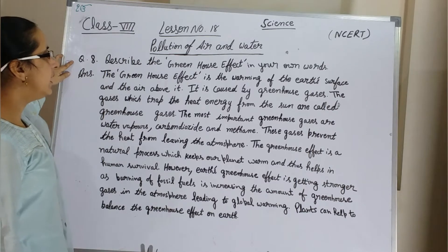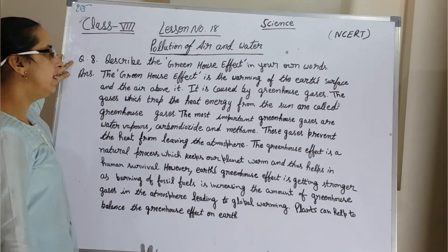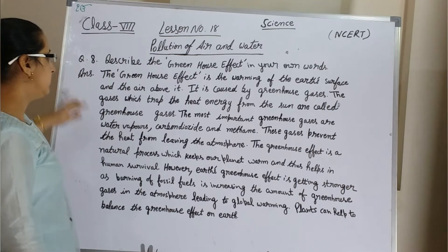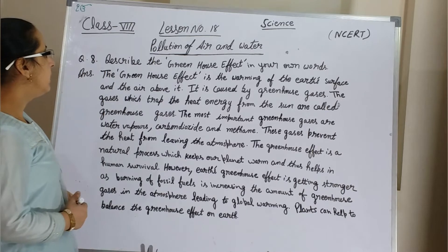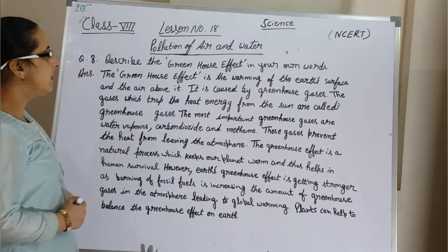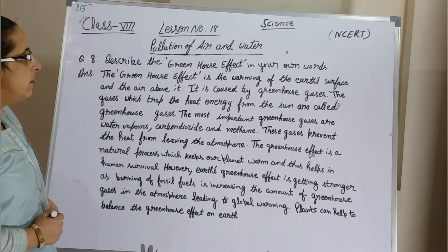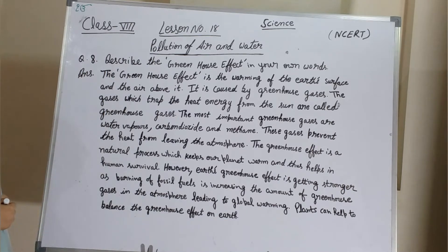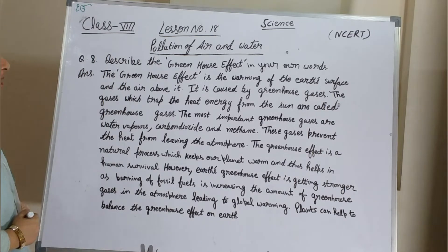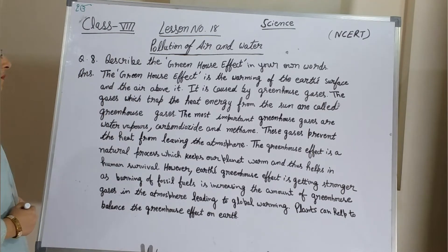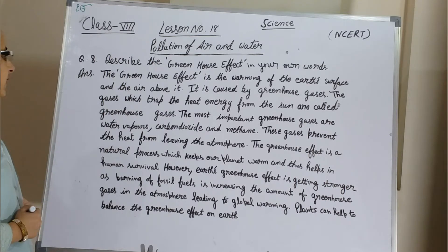Describe the greenhouse effect in your own words. Answer: The greenhouse effect is the warming of the earth's surface and the atmosphere above it. It is caused by greenhouse gases — the gases which trap the heat energy from the sun.